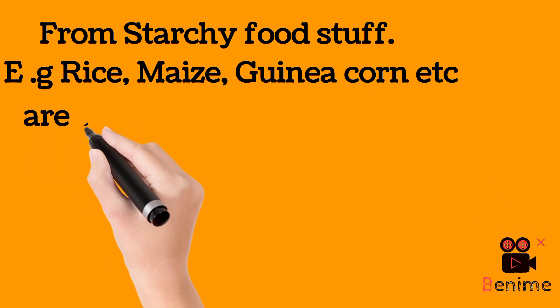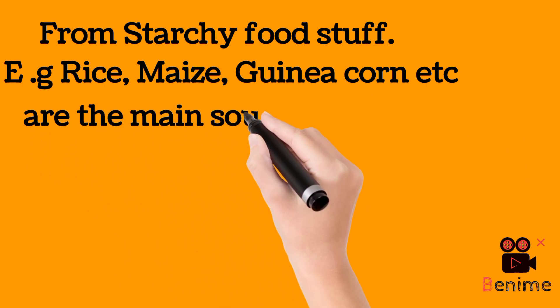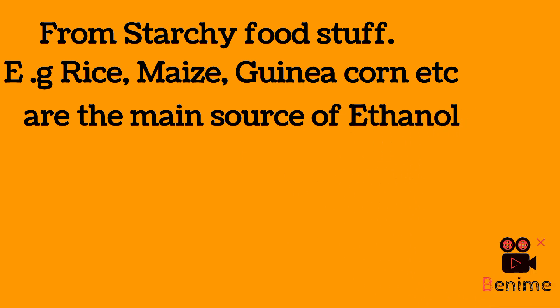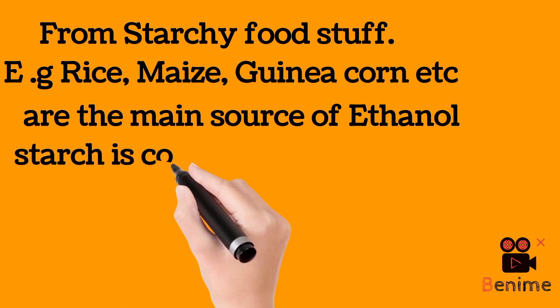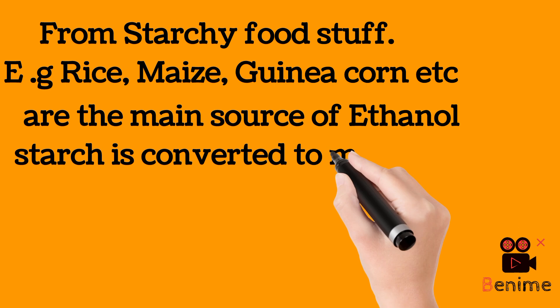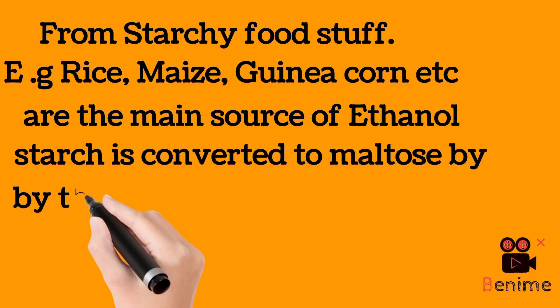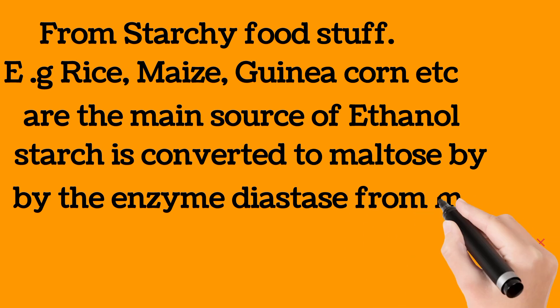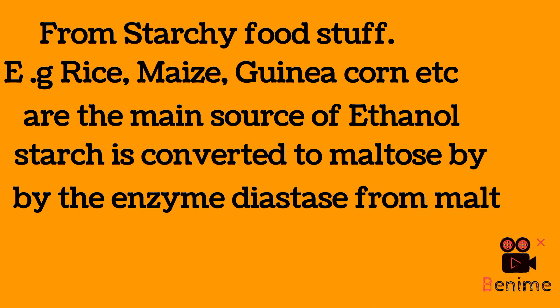How do we do it? The starch granules are first extracted by crushing and pressure cooking the material. They are then treated with malt at 50 to 60 degrees Celsius for an hour. Malt is partially germinated barley or millet which contains the enzyme diastase. The starch is then converted by this enzyme into maltose.